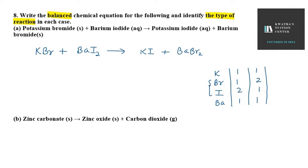So first, let's balance barium. On the left hand side, we multiply by 2 — so we write 2 here. Now barium has changed, but K has also changed — K on the left hand side becomes 2. So now we need to balance K and I as well, so we multiply by 2 on the right hand side. This is your balanced equation.